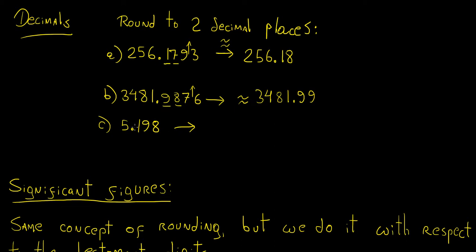For the last example, we grab the first two decimal digits and look at the one next to them, rounding it up because it's closer to 10. This is a special case: if that digit becomes 10, the next digit also reaches 10, so we carry the 1 further. That digit becomes 0 and the next becomes 2, so the result is 5.2.